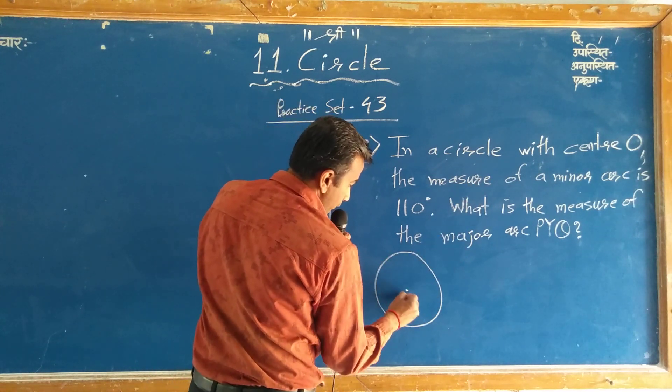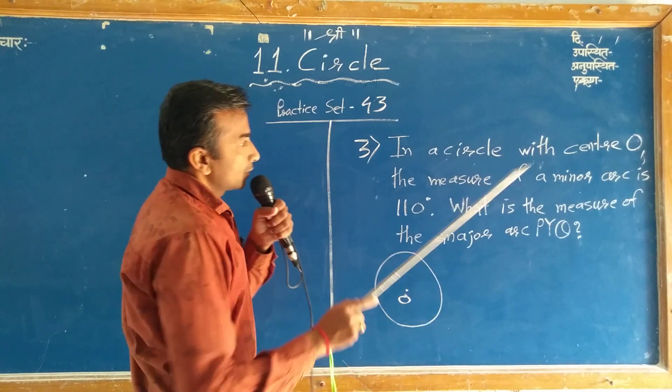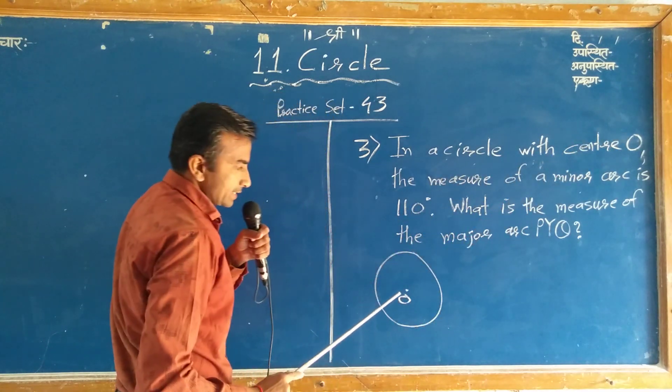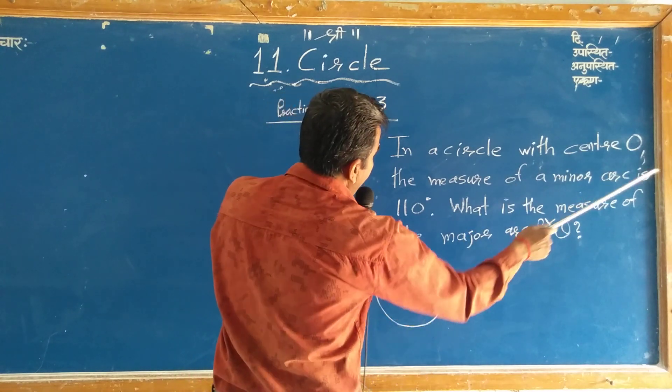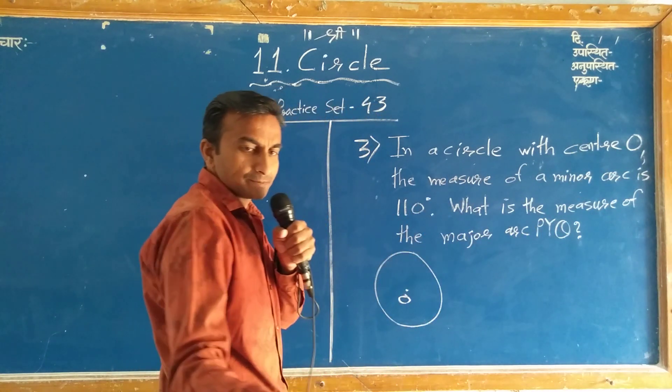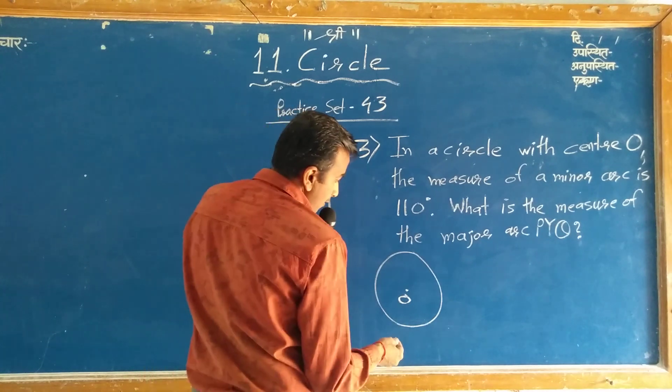In a circle with center O, the measure of a minor arc is 110 degrees.